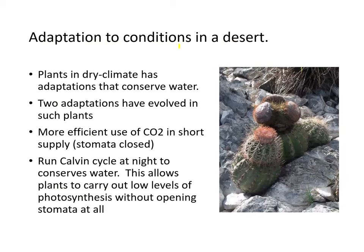Some adaptations to conditions in a desert: plants in a dry climate have adaptations that conserve water. Two such adaptations are more efficient use of CO2, and keeping stomata closed. Some plants actually run the Calvin cycle only at night to conserve water, allowing them to carry out low levels of photosynthesis without having to open the stomata at all.